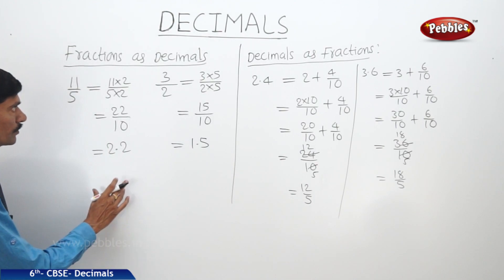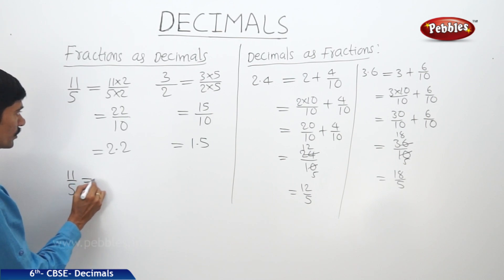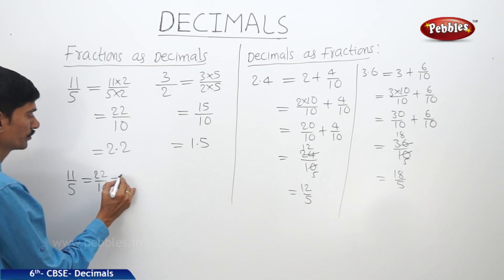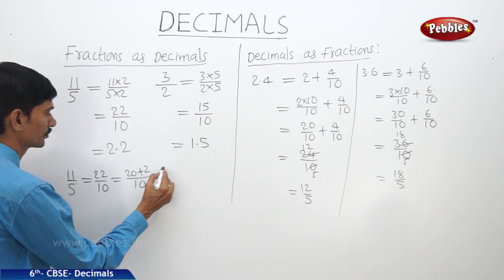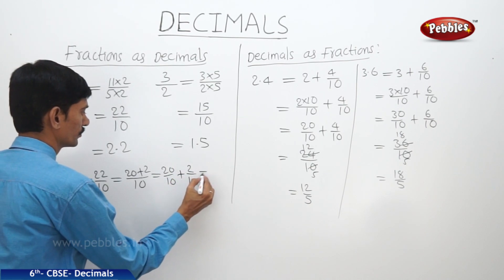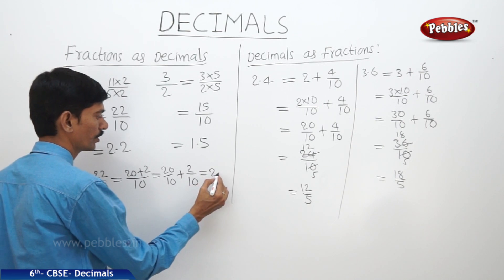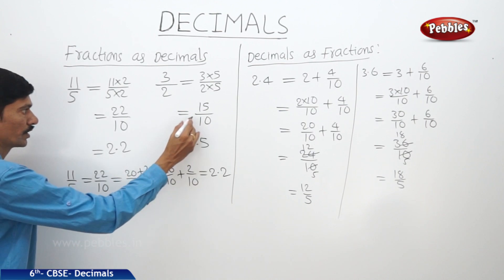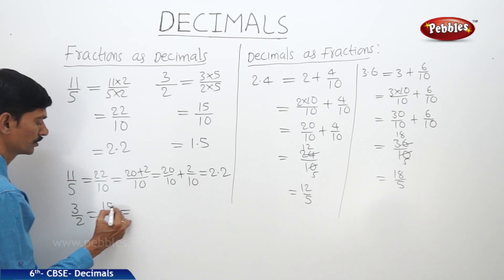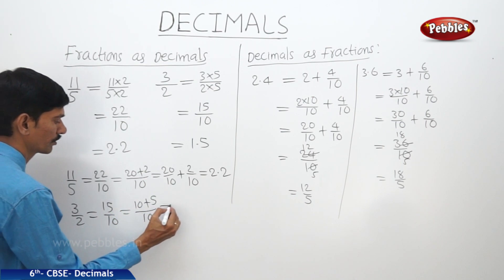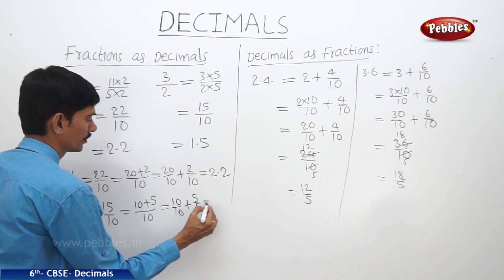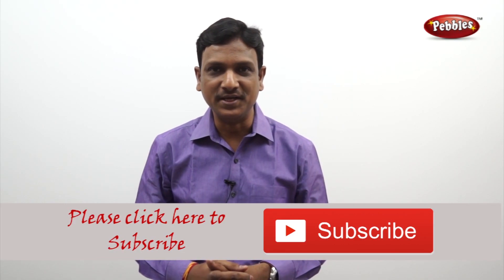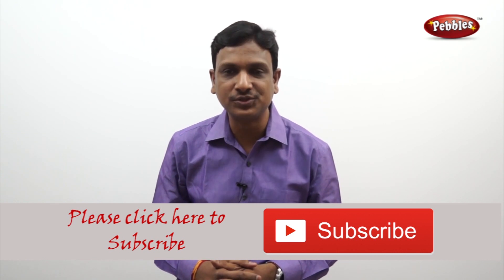Coming back to fractions as decimals: eleven by five equals twenty-two by ten, which is twenty plus two by ten — that is, twenty by ten plus two by ten equals two plus zero point two, giving two point two. Similarly, three by two equals fifteen by ten, which is ten plus five by ten — that is, one plus zero point five, giving one point five. If you like this video, please give a thumbs up and subscribe to our channel for more videos on the CBSE syllabus.